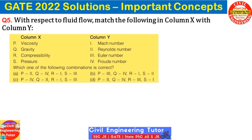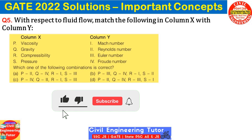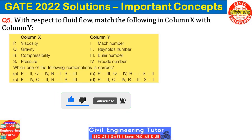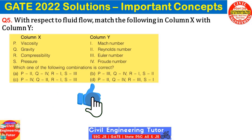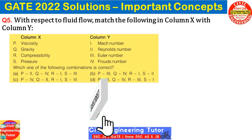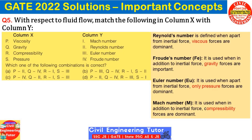Let's move to question number five. With respect to fluid flow, match column X with column Y. In column X we have viscosity, gravity, compressibility, and pressure. In column Y we have Mach number, Reynolds number, Euler number, and Froude number. Viscosity is related to Reynolds number, gravity is related to Froude number, compressibility is related to Mach number, and Euler number is related to pressure. The correct order is A.